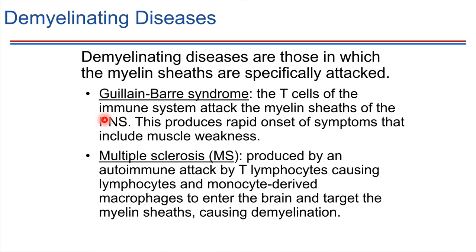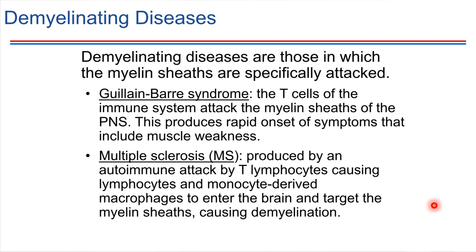Guillain-Barré happens in the peripheral nervous system, and the end result is that the person experiences muscle weakness because signals are not able to transmit to the muscles correctly — there's not as much activation of skeletal muscles. In the case of multiple sclerosis, the immune system targets the myelin sheaths in the central nervous system, specifically in the brain, demyelinating those neurons so they cannot signal as effectively. Both can be really serious diseases, and they all revolve around either Schwann cells or oligodendrocytes.